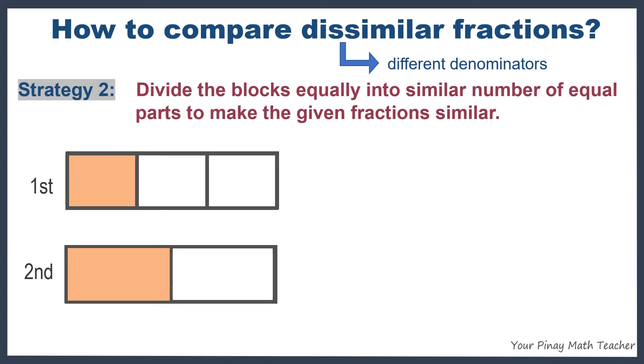Strategy 2. If the fractions are dissimilar, divide the blocks equally into similar number of equal parts to make the given fractions similar. In the first figure, the shaded part is one-third and in the second, it's one-half. Let us divide the two figures in such a way that they will have the same number of equal parts.